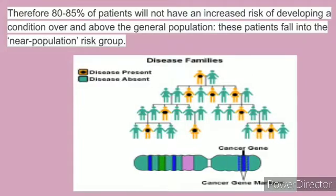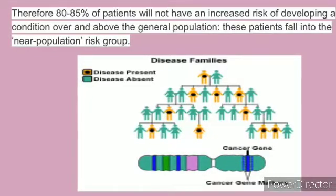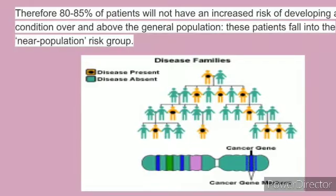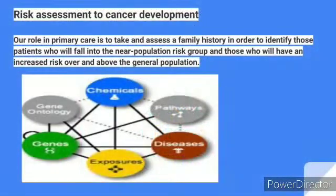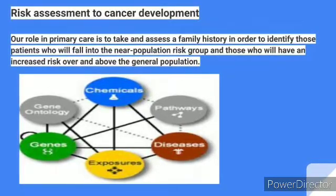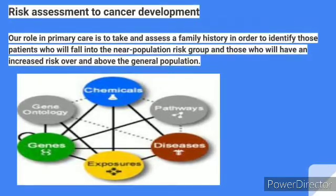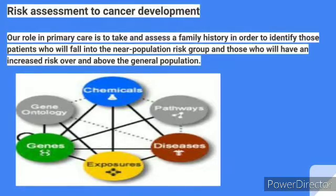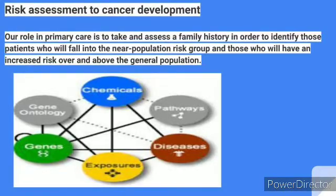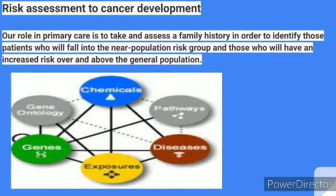As you see in the image, the deceased family members are very important when we consider the patient's family history and medical history. Our role in primary care is to take and assess a family history of the patient and the family in order to identify those patients who fall into the near-population risk group and those who have an increased risk over and above the general population.